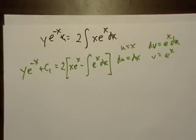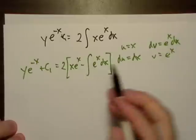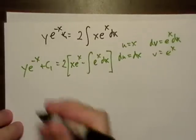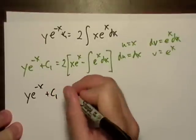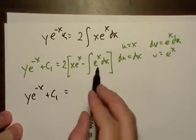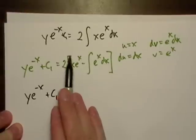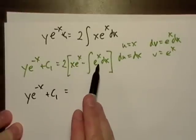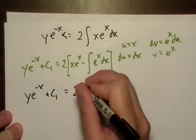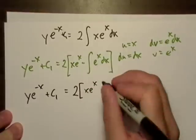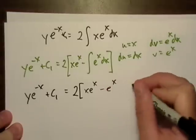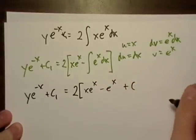So, let's see here. So, ye^(-x) + C₁ is equal to 2 times the integral of xe^x dx. And this isn't too bad, because, you know, the integral of e to the x is just e to the x plus C. So, what I'm going to do is I'm going to distribute the 2 and do this integral all at the same time. Actually, no, I'm not. I'm just going to do it step by step.